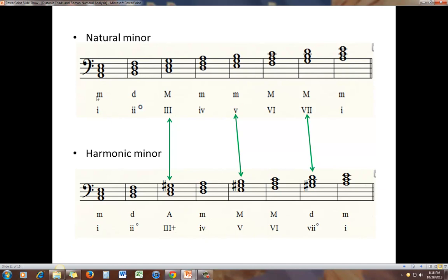Here you can get a look at both natural and harmonic minor with the altered chords. Half step higher, the mediant goes from a major to an augmented. Dominant goes from minor to major, and we move from subtonic to leading tone from major to diminished.